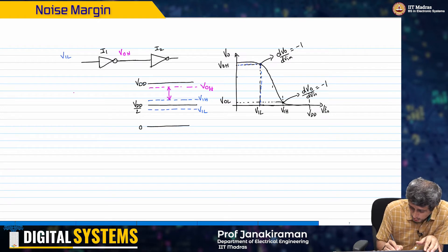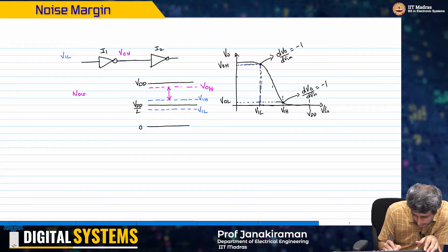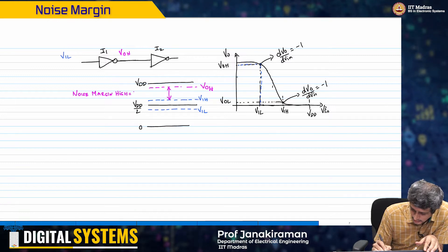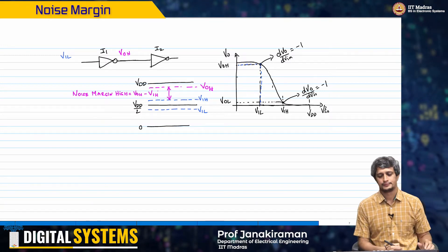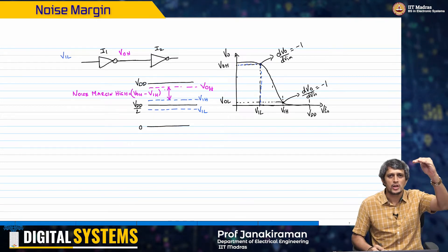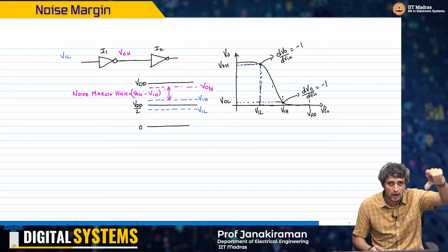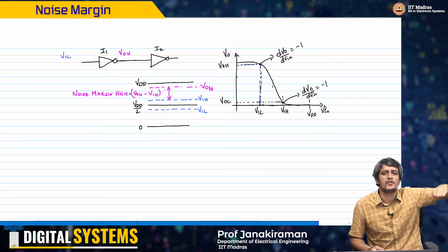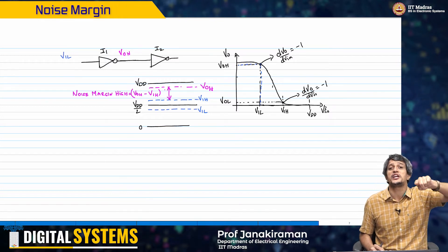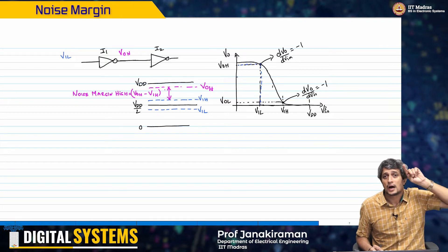Therefore, the noise margin high equals VOH minus VIH. It means even if the VOH fell by the noise margin, you would still only hit VIH and you are guaranteed that the inverter I2 will still treat it as a logic high.